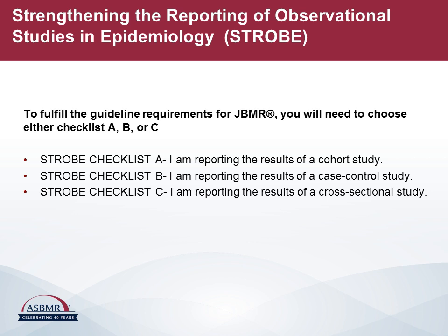Next question: I have a question about one of the items in the STROBE checklist — I'm unsure of the meaning of 'report numbers of outcome events or summary measures.' Outcome events will be the primary and secondary outcomes of the study, which always have to be described in observational or prospective studies. Summary measures will be the measurements used to document the outcome event. For example, if one of the outcomes is bone mineral density, then the summary measure would be measurement of bone density by dual-energy X-ray absorptiometry.